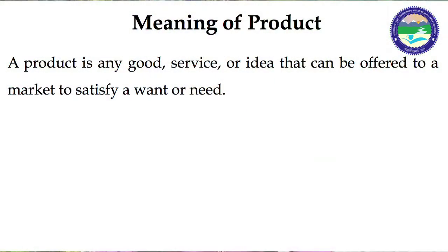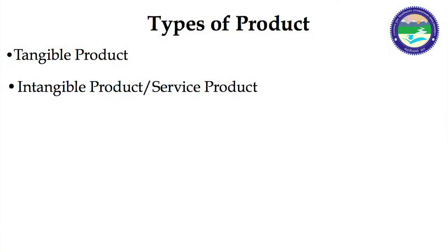Firstly, we will understand about the meaning of product. A product is any good, service or idea that can be offered to a person in the market, and that product should have the ability to satisfy the needs and wants of the person who purchased it. We can divide a product into two parts: tangible products and intangible products. Intangible products are also known as service products.